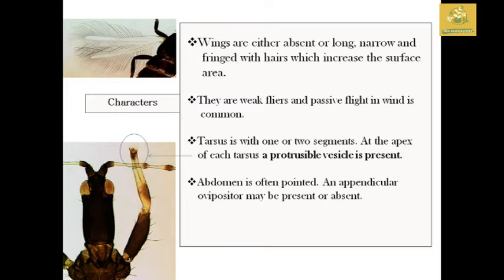This is an important character in Thysanoptera. The tarsus has two segments, and at the apex there are two segments ending in a pointed structure.